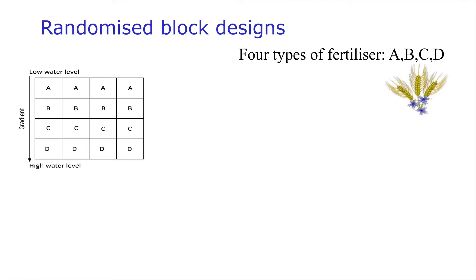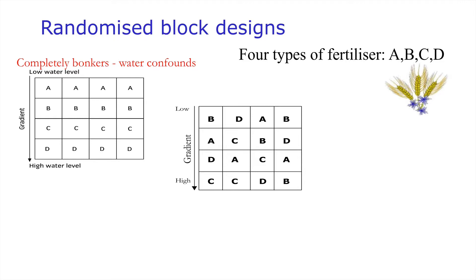However this would be an entirely inappropriate design to choose because of course water confounds. If we did the analysis and found for example that fertiliser D looked like it had the highest overall yield of plants, how do we know that that's not actually caused by the water level rather than the fertiliser? An alternative approach is to simply randomly allocate the four replicates of each of the types of fertiliser across the entire grid. In this case what we have here is the water gradient adding noise to the overall relationship but not obscuring it in the way that the former design did. So it's an improvement but we could get better.